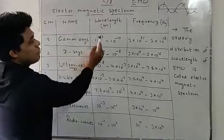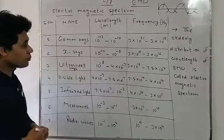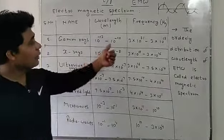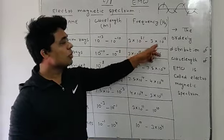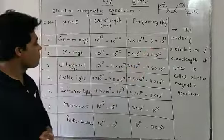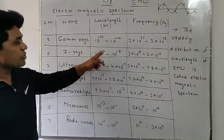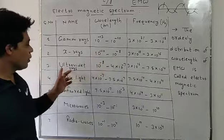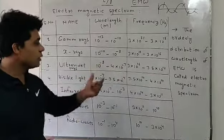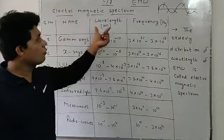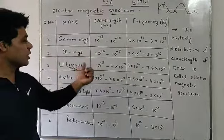Gamma rays have a wavelength range of 10⁻¹³ to 10⁻¹⁰ meters, with a corresponding frequency of 3×10²¹ to 3×10¹⁸ hertz. X-rays have a wavelength of 10⁻¹⁰ to 10⁻⁸ meters. Ultraviolet rays range from 10⁻⁸ to 4×10⁻⁷ meters.